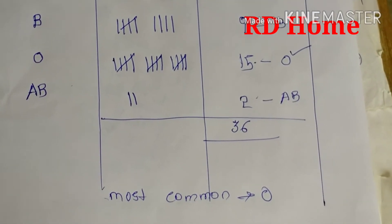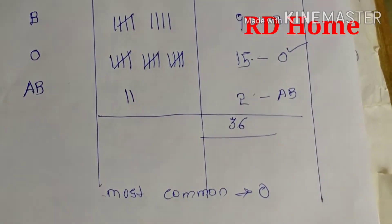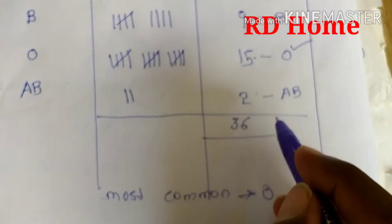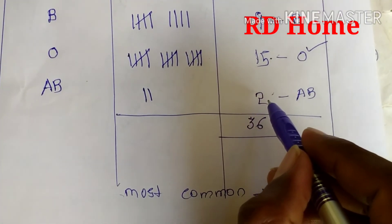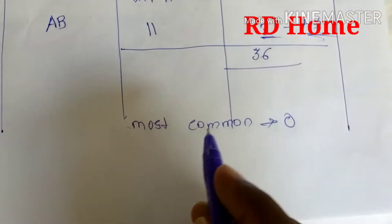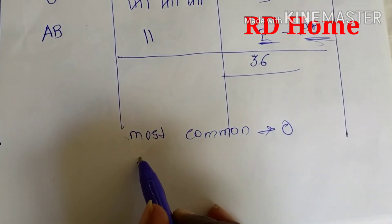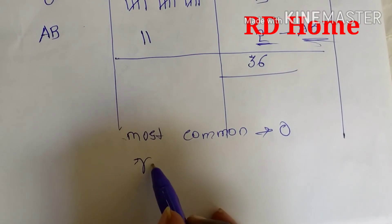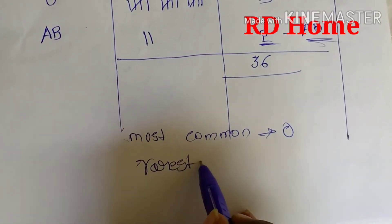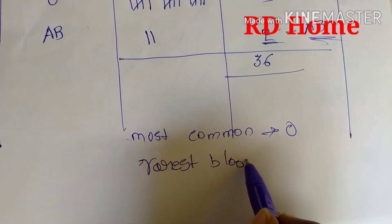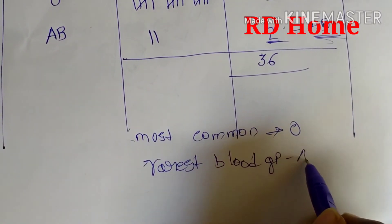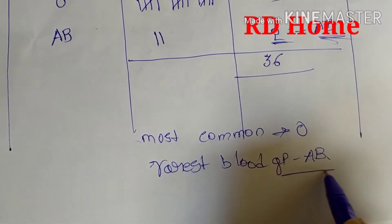Next, which is the rarest blood group — that means which blood group has the least number of students? Only AB has the fewest, with just 2 students. So the least common, that means the rarest blood group, is AB.